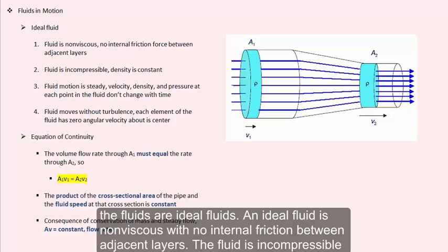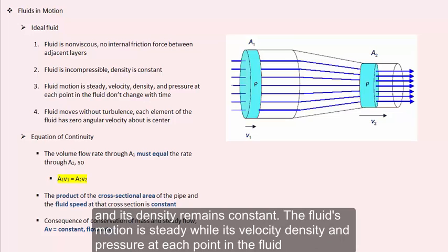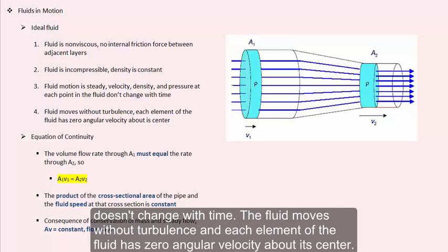An ideal fluid is non-viscous, with no internal friction between adjacent layers. The fluid is incompressible, and its density remains constant. The fluid's motion is steady, while its velocity, density, and pressure at each point in the fluid doesn't change with time.